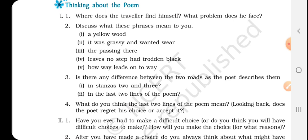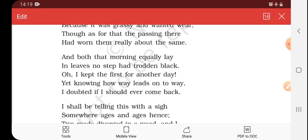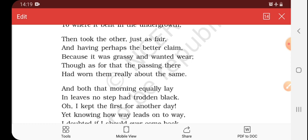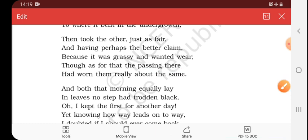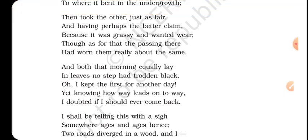The next phrase is 'the passing there.' The passing there means the thing which had to lead to the crossing — I will take you back to the line: 'Though as for that, the passing there had worn them really about the same.' So who were 'the passing there'? Think of it — those who went from one point to another.